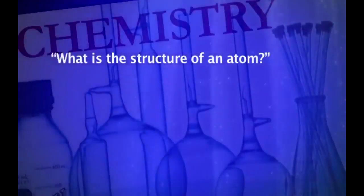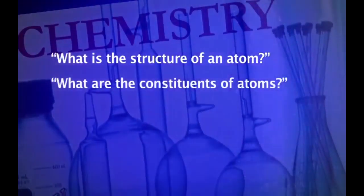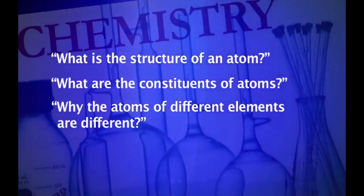Dear learners, you know that according to Dalton's atomic theory, the atoms of different elements are different, and in chemical reactions the atoms are rearranged between different reacting substances. However, today we know that the atom is not indivisible as was thought by Dalton. The atom has a structure and contains smaller constituents in it. In this unit, we will attempt to find out the answers to questions like: what is the structure of an atom, what are the constituents of an atom, and why the atoms of different elements are different. We will begin this unit with the study of discoveries of subatomic particles such as electrons, protons, and neutrons.